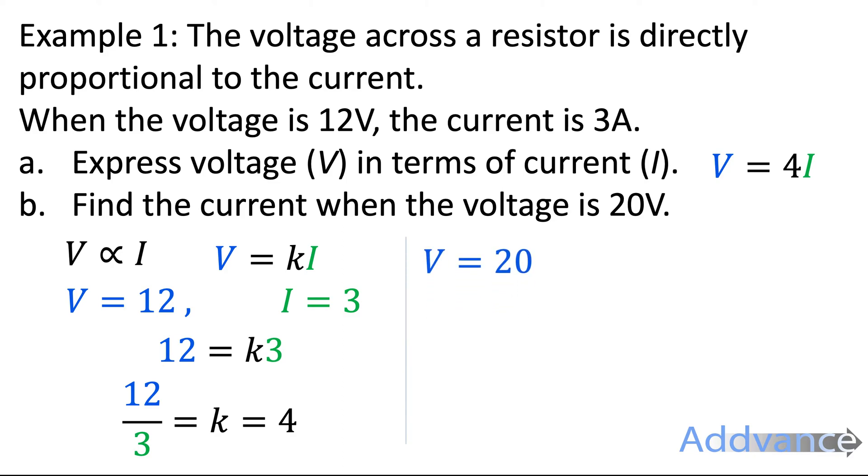So now we know the voltage is 20 volts and we can put it into the equation. The voltage equals 4I. 20 equals 4I. We divide by 4 and we get I is 5. And that is the correct answer.